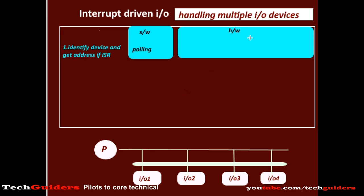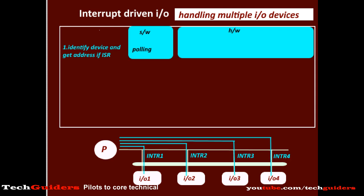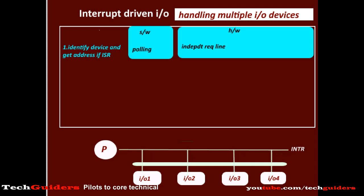Relying more on hardware, we can use a separate interrupt request line and a separate interrupt acknowledgement line for each I/O device. However, this requires a lot of communication lines, so usually a common interrupt request line is shared by all the I/O devices.